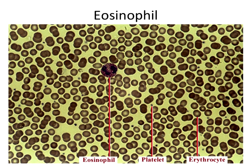Red blood cells are really easy to identify. They're always going to be those cells that just look kind of flat and donut-shaped. Notice that none of your red blood cells have any nuclei. They don't have a nucleus in them, and in lecture we'll talk about exactly why that is. They lose their nucleus as part of their development.